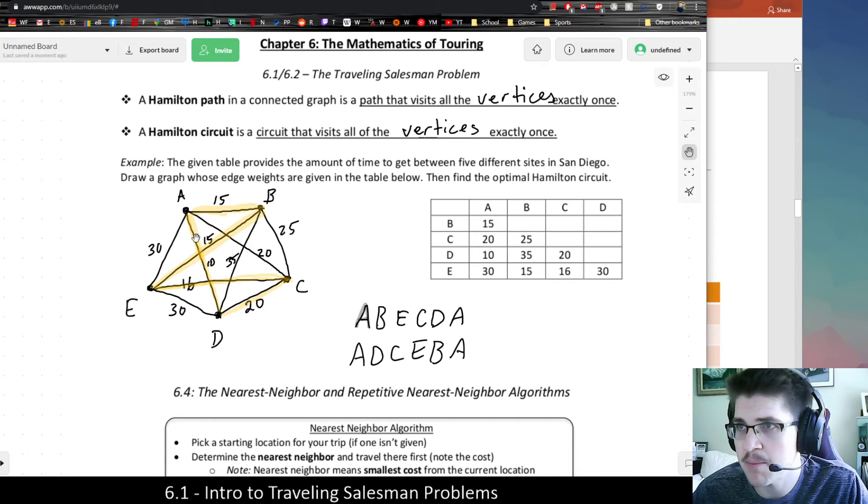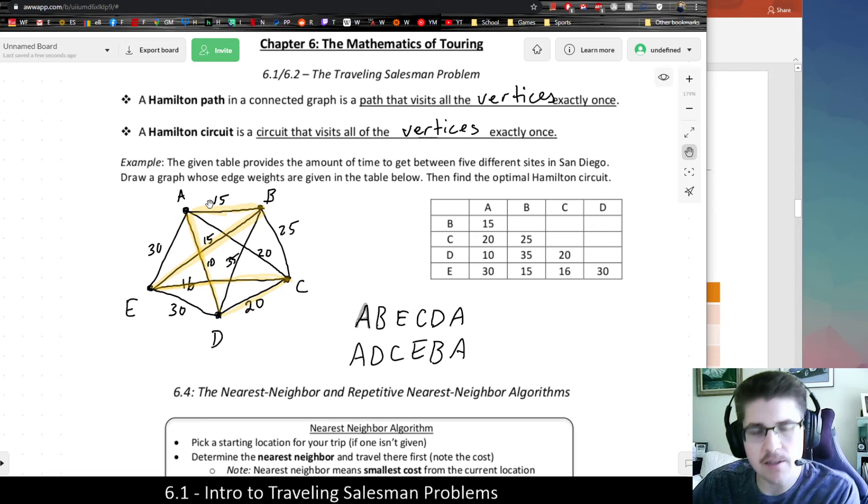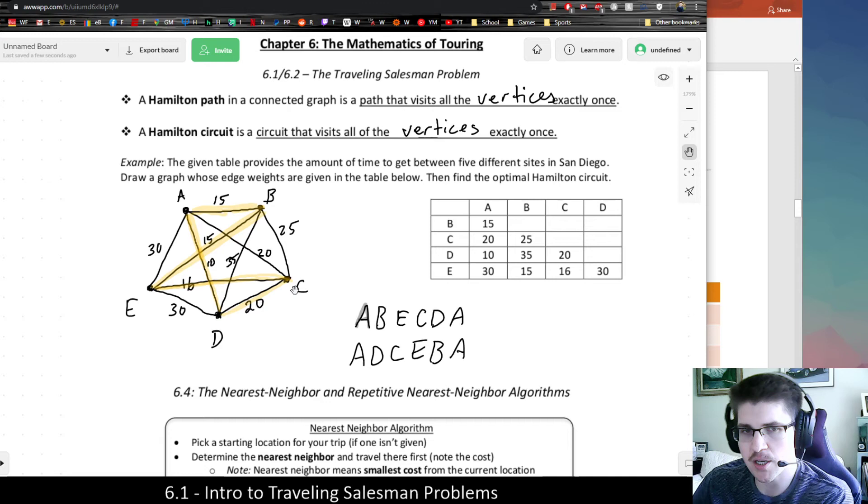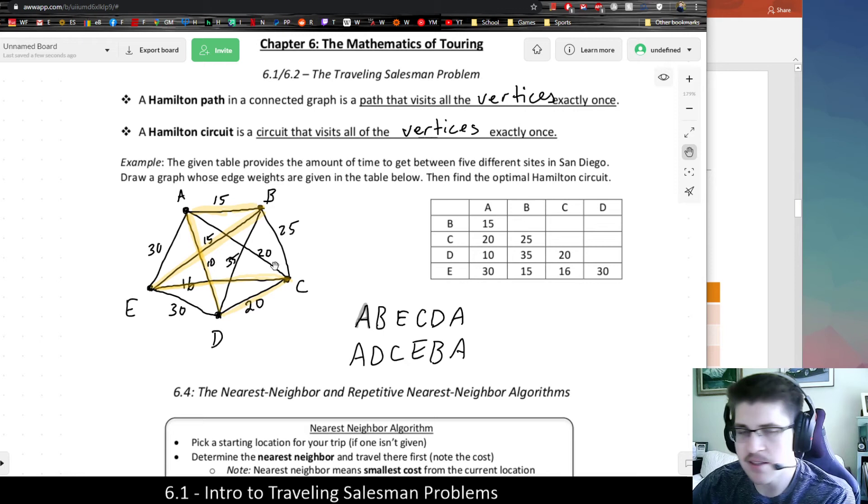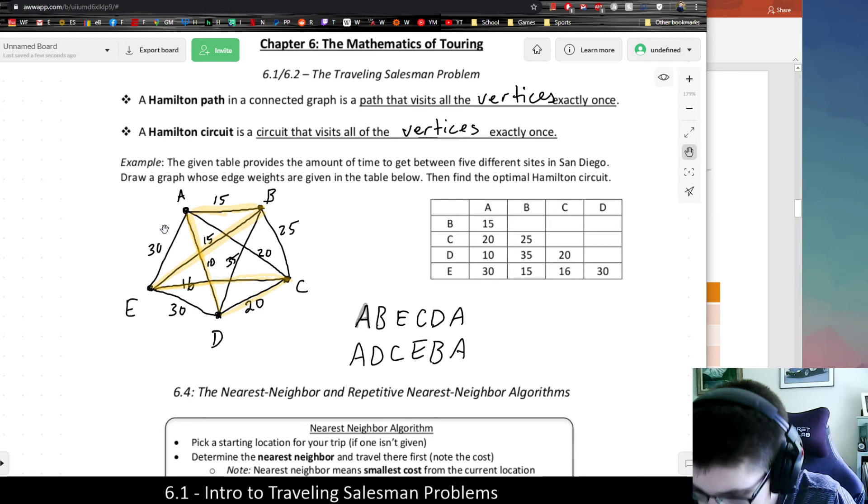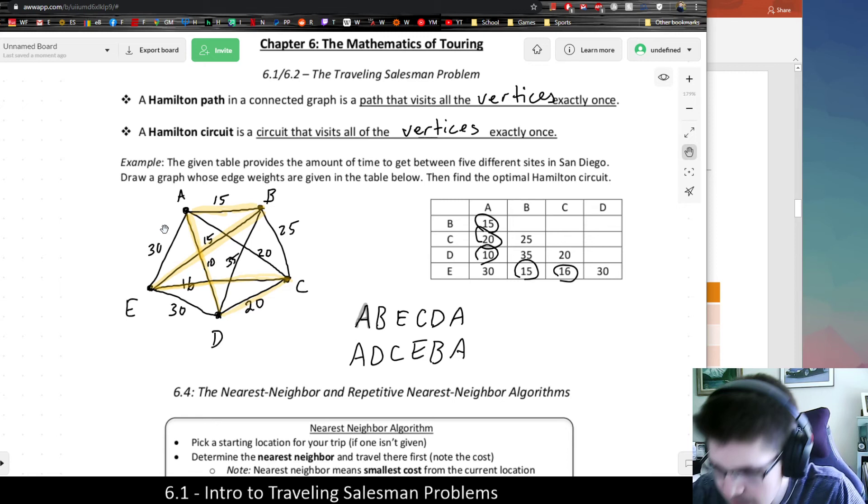Sometimes some people don't really like graphs or have a little bit of a harder time understanding all the information, but sometimes writing them out in an alphabetical order, it's very similar to the Shapley-Shubik power distribution where we're trying to write out the permutations of these and figure out which permutation is the best. That's kind of how the brute force algorithm works, and we're going to do that at the very end of this chapter. But basically, what we have is the best answer. Going back to why is this the best answer? Notice that this one's the best because I literally used all of the smallest numbers, the shortest times to get between each of the points. I didn't use any of the big numbers. I used all the small numbers.